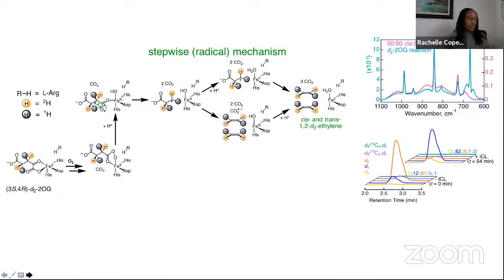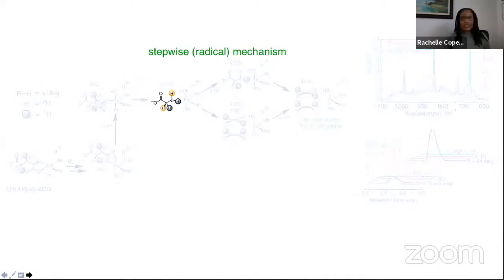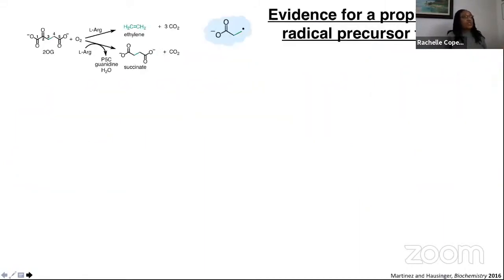As I mentioned, we don't know exactly what the branch point intermediate is, but what we can surmise from these results is the intermediacy of a propionyl radical. One idea we had was to try to see if we could get other evidence corroborating the intermediacy of this radical by looking for alternative products of its breakdown. The native reaction is pretty well-coupled; we only see the products that I have depicted here.